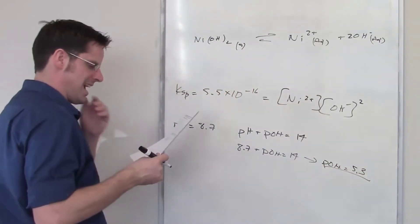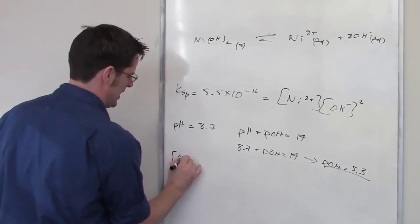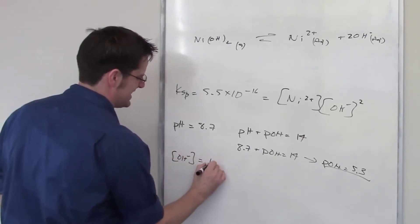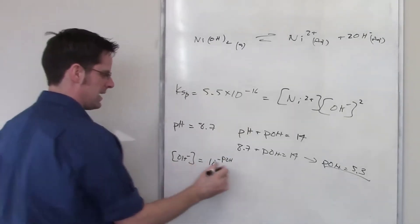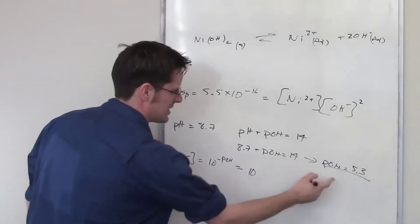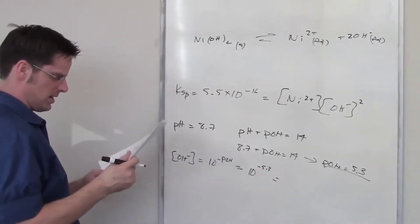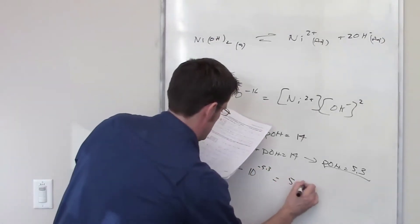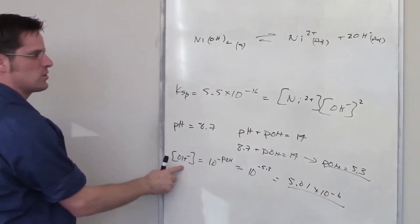Why in the world do I care about that? Well, there exists an equation that tells you that the hydroxide ion concentration is equal to 10 raised to the negative pOH. And I don't even know if we've used that before, but I can figure that out. 10 raised to the negative 5.3 is going to be equal to a number, and that number happens to be 5.01 times 10 to the negative 6. That's the concentration of hydroxide.